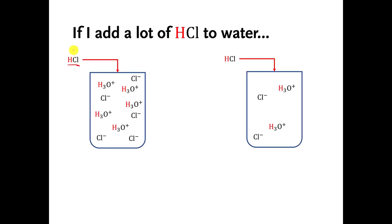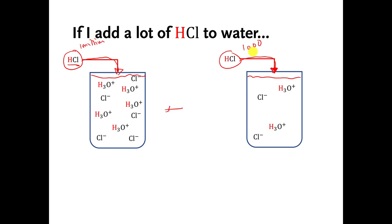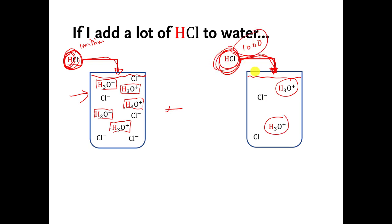The example I'm going to use is hydrochloric acid. Imagine I have two containers — they both have the same amount of water in them, almost all water molecules. In one container I throw in a bunch of HCl molecules — say a million. In the other container I throw in some HCl molecules, but not as many — maybe just a thousand. Because HCl is strong, almost all of those H pluses are going to get donated to water, making H3O plus ions in both containers.